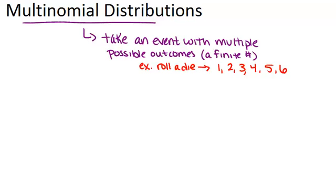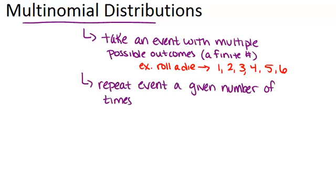Then what you're going to do is repeat this event a given number of times. Then you could find the probability of any ultimate outcome. For example, if you were to roll a die five times, you could figure out the probability that you get two threes and three fours.